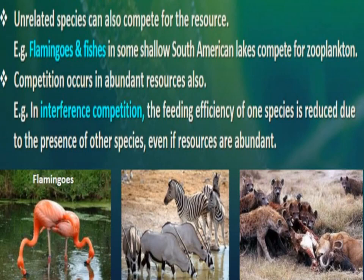Unrelated species can also compete for resources. For example, flamingos and fishes in some shallow South American lakes compete for zooplankton. This is an example of interspecific competition between two unrelated species. However, this type of competition is mostly found among closely related species.